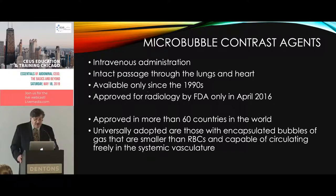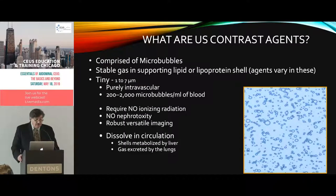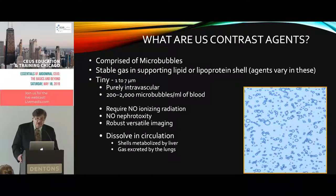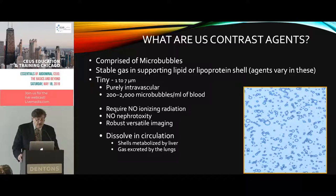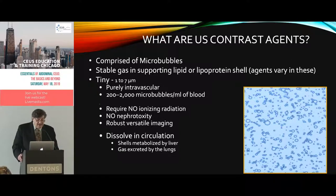These agents are encapsulated bubbles of gas smaller than red blood cells, capable of circulating freely in the vasculature. The gas is a special stable gas — not air — actually used by anesthesia, so they're very safe. They're surrounded by a lipid or lipoprotein shell for stability. They're very small, one to seven micrometers, and truly intravascular agents — which is important because CT and MR agents are not. We get thousands of microbubbles in a milliliter of blood. We're not using ionizing radiation, which is particularly important with children who have chronic diseases requiring multiple imaging.